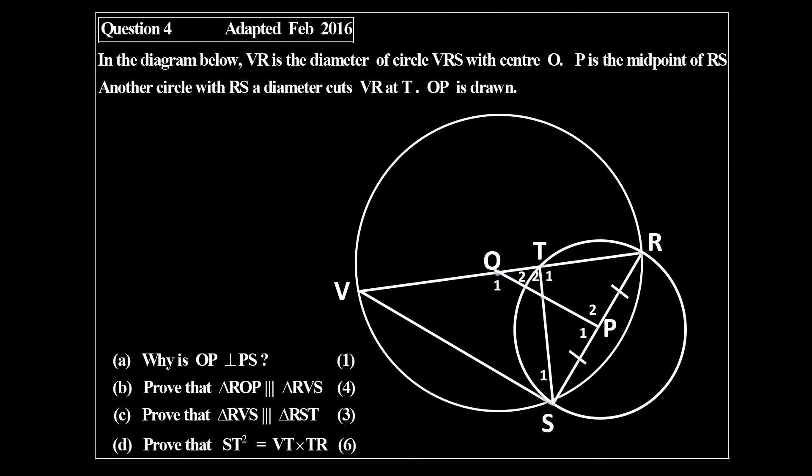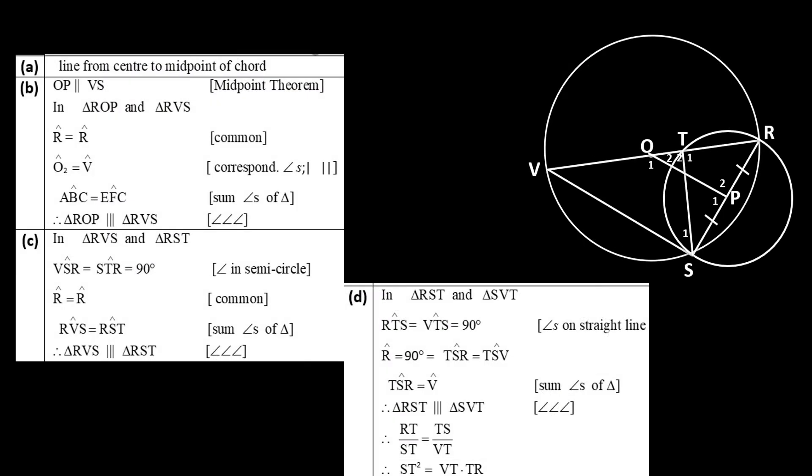Question four is from the February 2016 paper with four questions. So in the first question there we have to prove two triangles similar, and then in the last question we have to prove a relationship proportion of sides, and there we first of all have to prove two triangles similar.